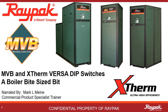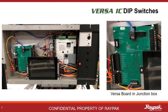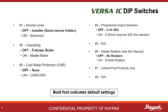In this presentation, you will learn how to set the Versa Dip Switches for the MVB and Xtherm Commercial Boilers. The VersaBoard for these boilers is located in the junction box behind the front panel. There are eight dip switches on the VersaBoard and they are easily accessible at the bottom of the board. We will discuss each of them on the following slides.